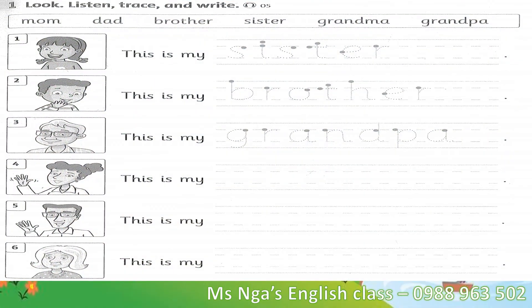Listening 5. Look. Listen. Trace and write. 1. This is my sister. 2. This is my brother. 3. This is my grandpa. 4. This is my mom. 5. This is my dad. 6. This is my grandma.